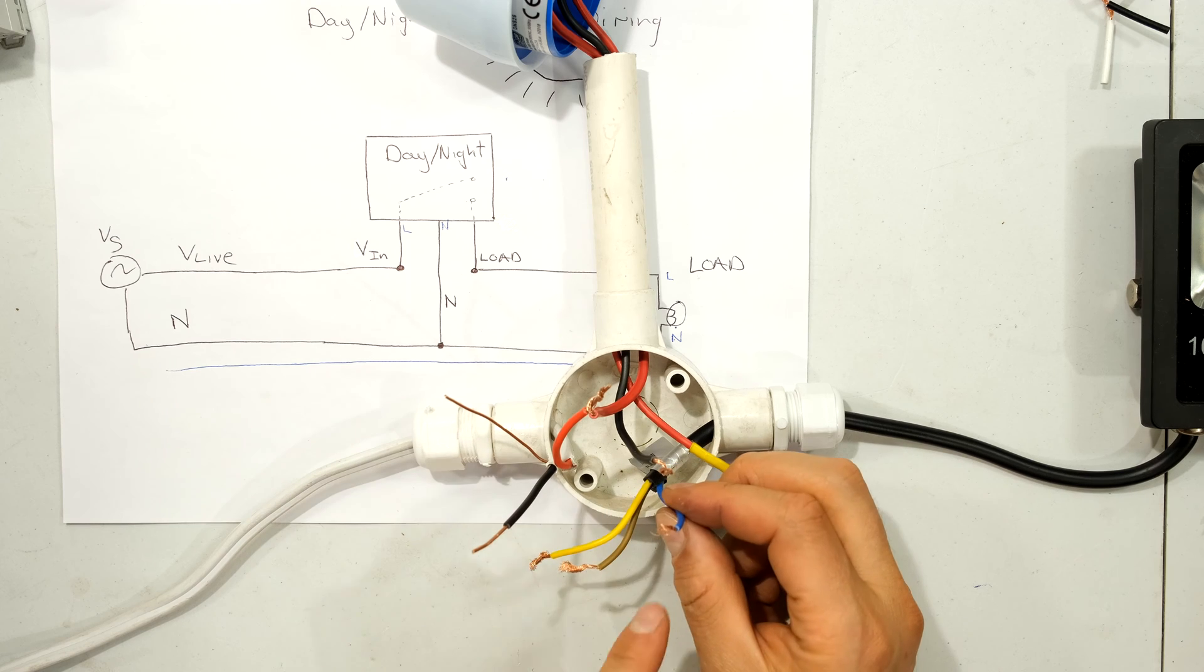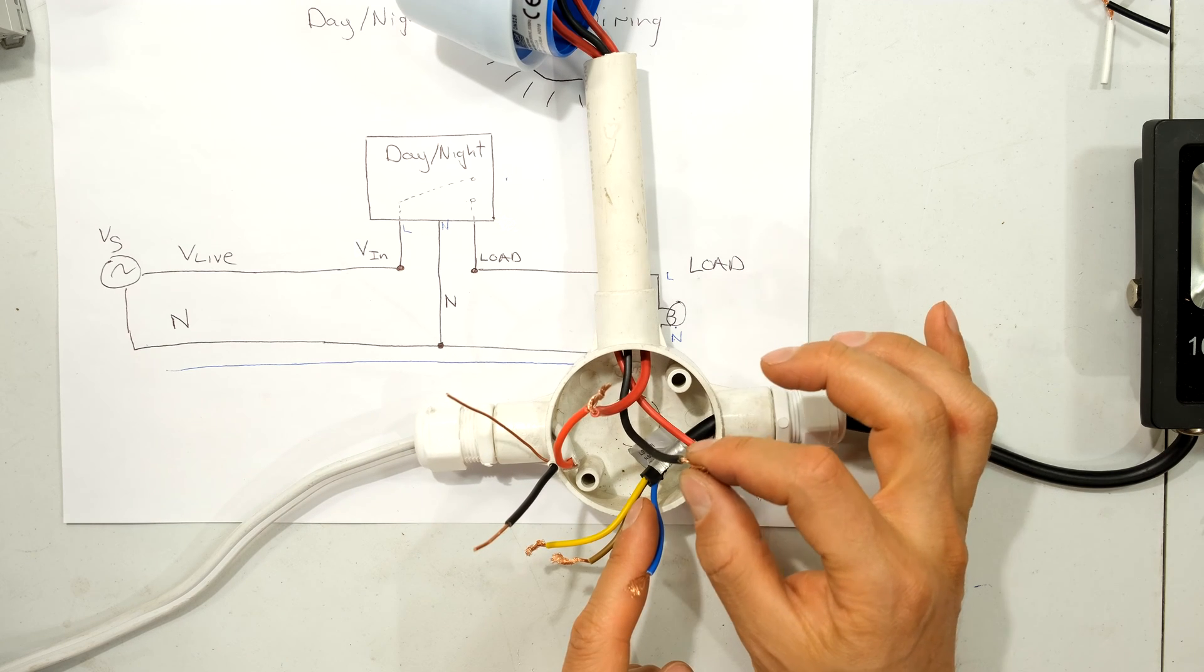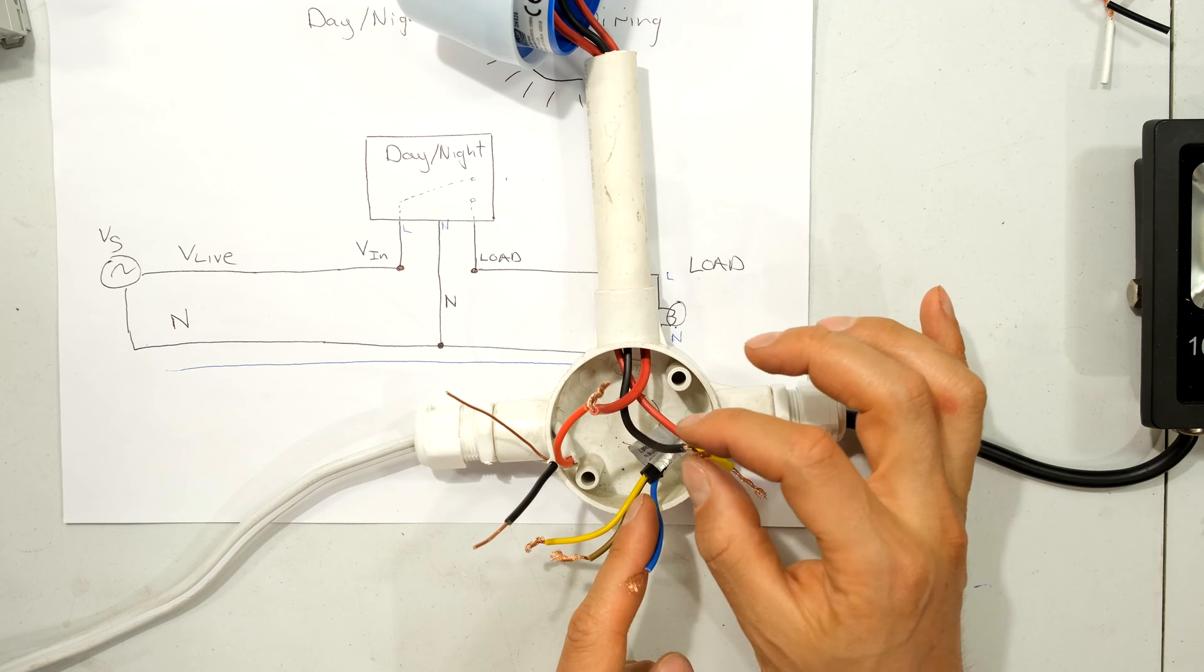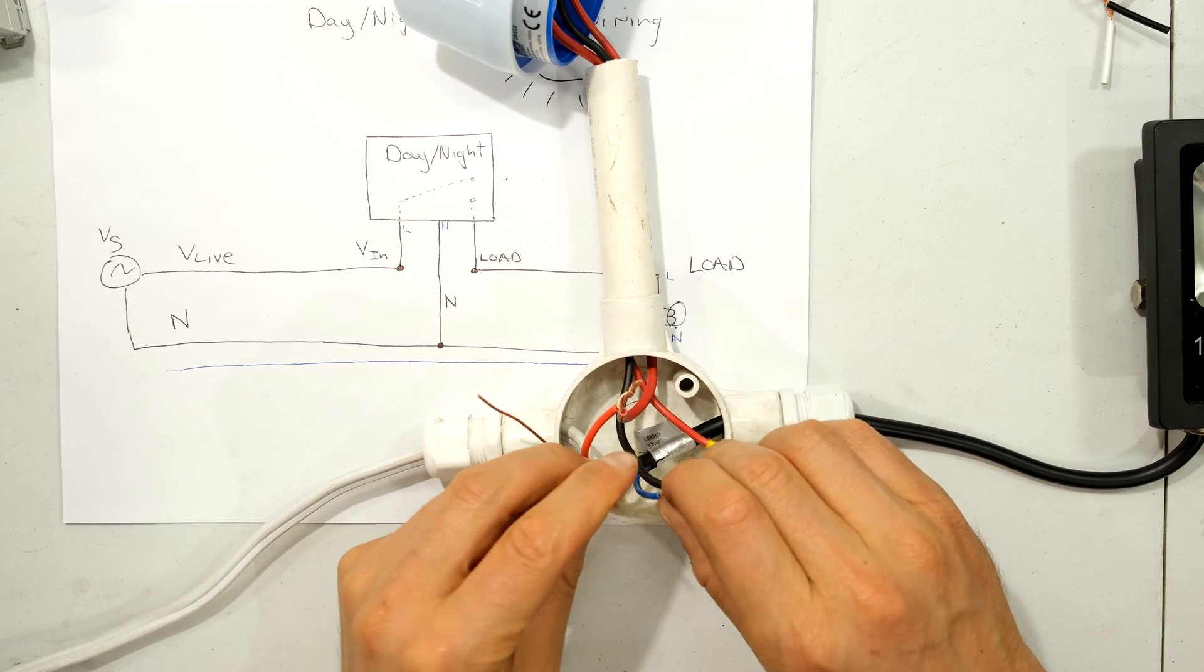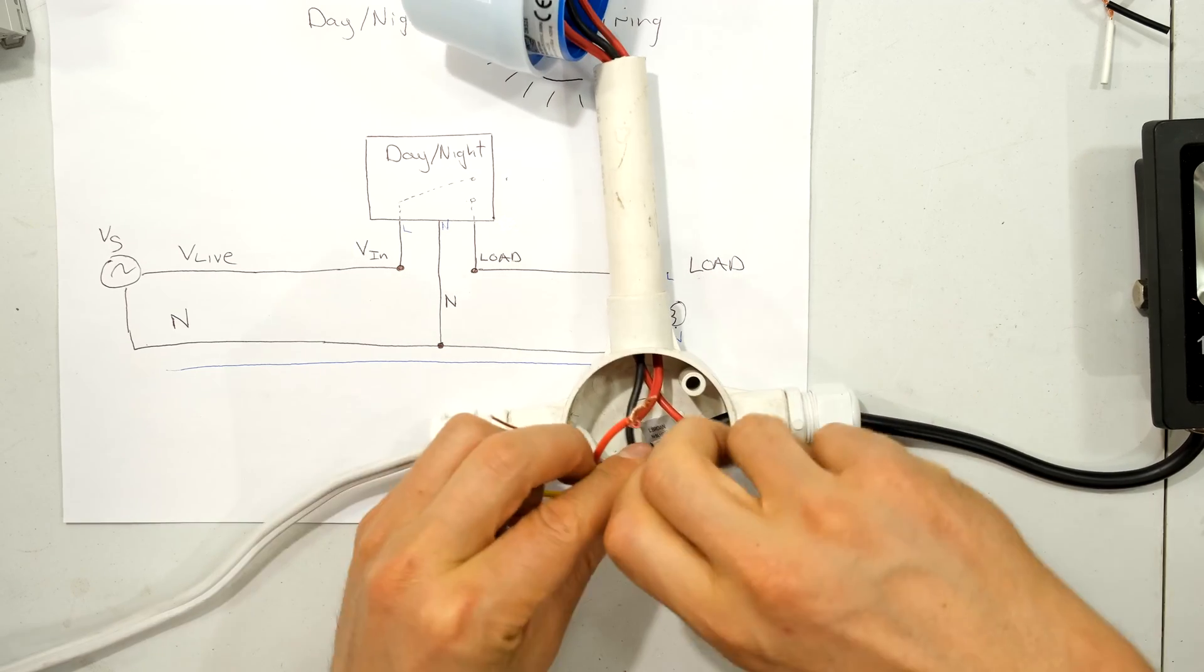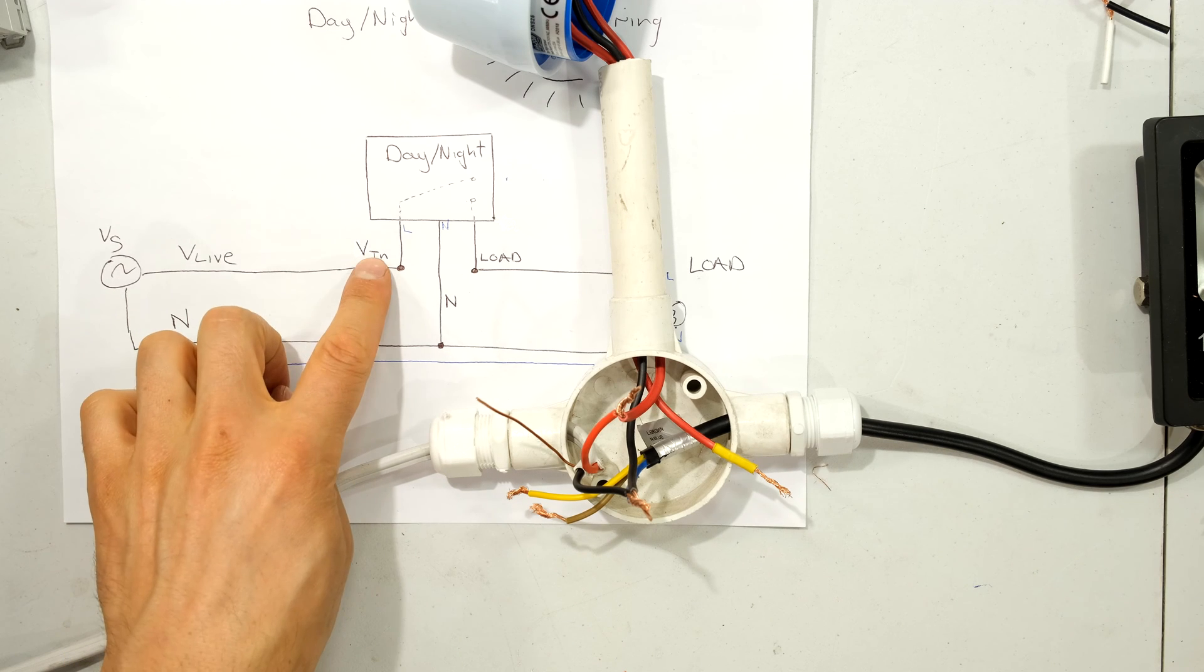And the neutral from my light is this blue wire over here. And the neutral from my day-night sensor is this wire over here. So all three of these need to be twisted together. Right, so I've done that and that.